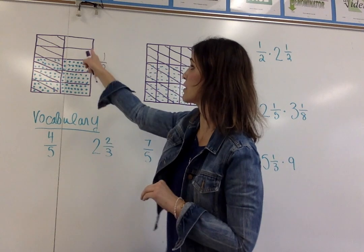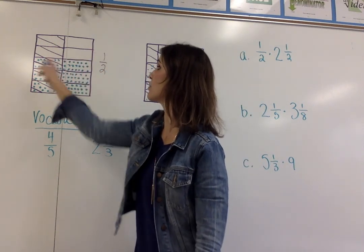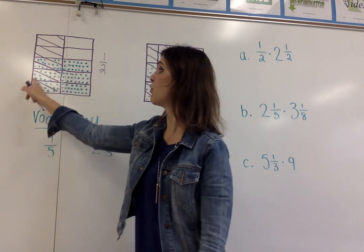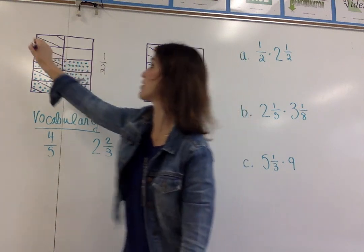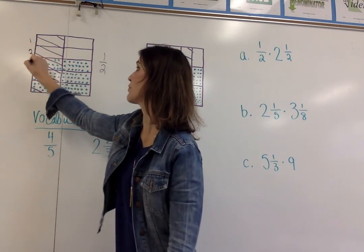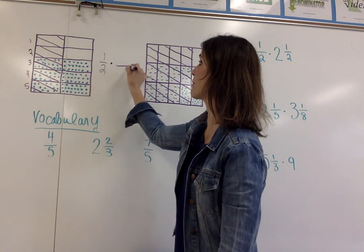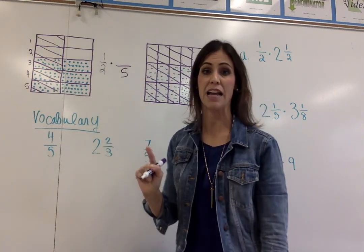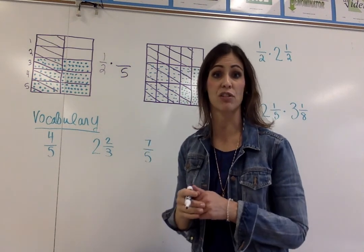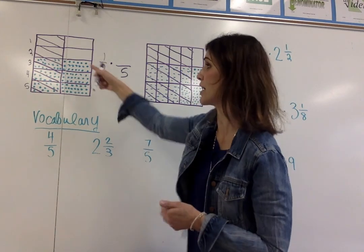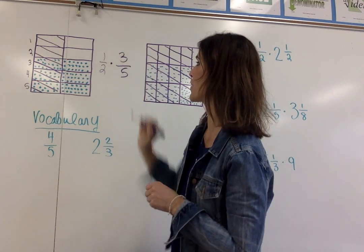I then am going to look to see I have horizontal lines — four lines that are splitting the square into five sections. So I know the denominator on my second fraction is five, and three out of the five sections going horizontally are shaded in or marked with the dots. So that fraction is going to be three-fifths.